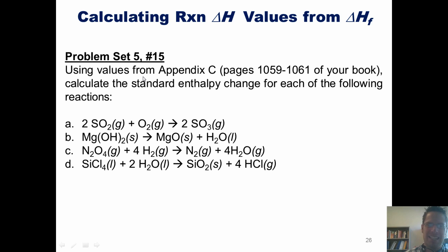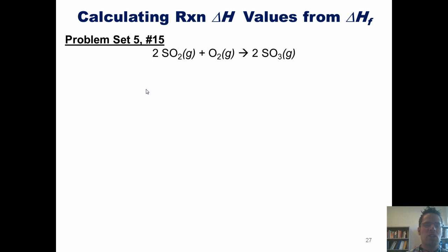Using our values from Appendix C, calculate the standard enthalpy change for each of the following reactions. Let's start with the first one: two moles of sulfur dioxide combining with one mole of O2 to form two moles of sulfur trioxide. From the steps delineated in our earlier slide, we first want to show an equation for each individual product and reactant that indicates how it is formed from its parent elements.